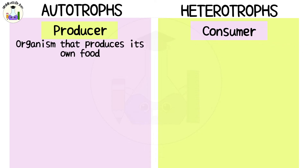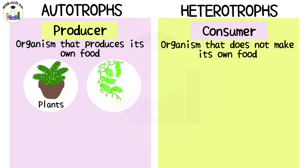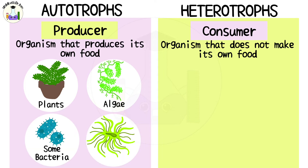An autotroph is basically an organism that produces its own food. Some examples of autotrophs are plants, algae, some bacteria, and phytoplankton.